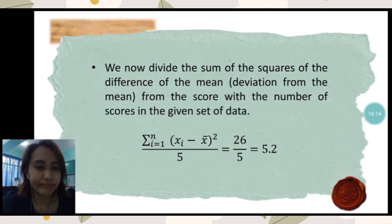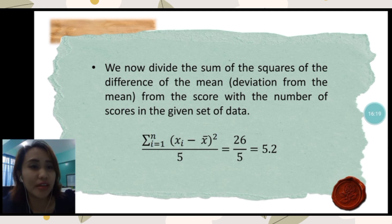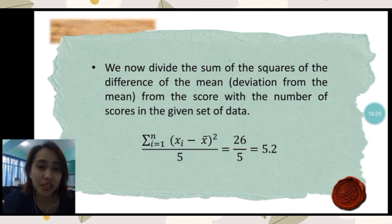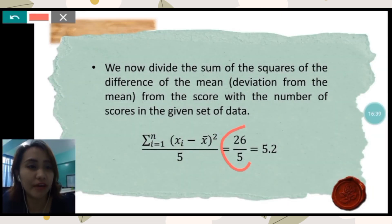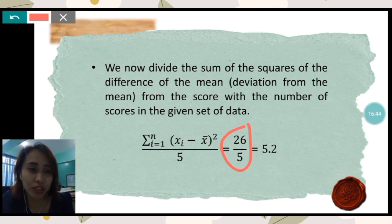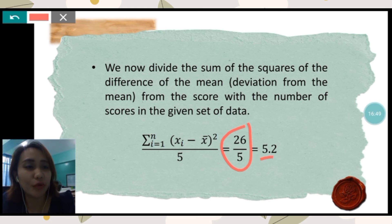After getting the sum of the squares of the differences, we now divide by the number of scores in the given data set. Since there are 5 female students, we simply divide 26 by 5, giving us 5.2. Therefore, the variance of the data set is 5.2.